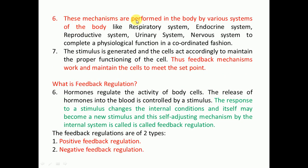These mechanisms are performed in the body by various systems working in a coordinated fashion. The stimulus is generated by glands or neurons, and cells act accordingly to maintain proper functioning of the cell and the body as a whole. Feedback mechanisms work to maintain cells at the set point — determining when to switch on and when to switch off a particular physiological response. This set point is maintained by feedback regulation mechanisms.